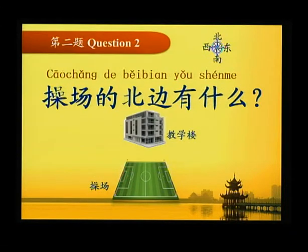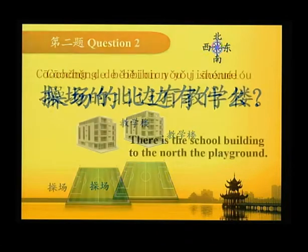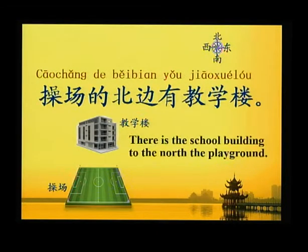第二题 Question two: 操场的北边有什么？ 答案是 — 操场的北边有教学楼 — There is a school building to the north of a playground.